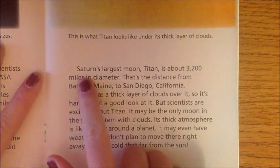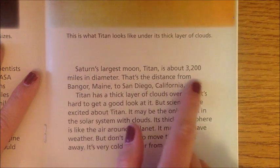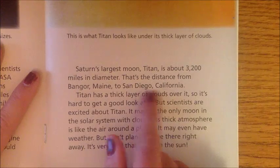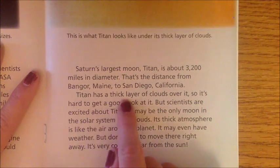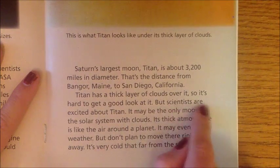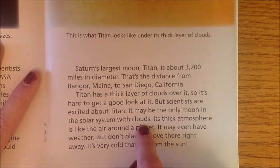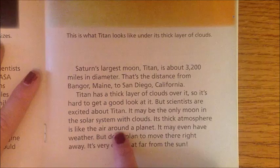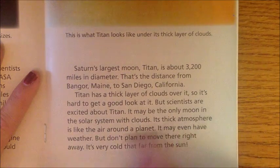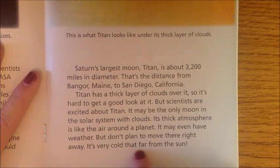Saturn's largest moon, Titan, is about 3,200 miles in diameter — that's the distance from Bangor, Maine to San Diego, California. Titan has a thick layer of clouds over it, so it's hard to get a good look at it. Scientists are excited about Titan because it may be the only moon in the solar system with clouds. Its thick atmosphere is like the air around a planet, and it may even have weather. But it's very cold that far from the sun.